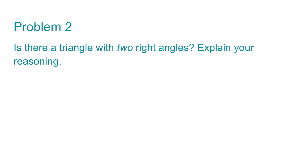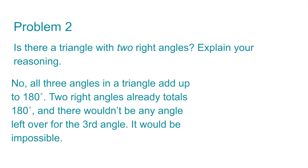Number 2. Is there a triangle with two right angles? Explain your reasoning. No. All three angles in a triangle add up to 180 degrees. Two right angles already total 180 degrees, because each right angle is worth 90 degrees, and there wouldn't be any angle left over for the third angle. It would be impossible.